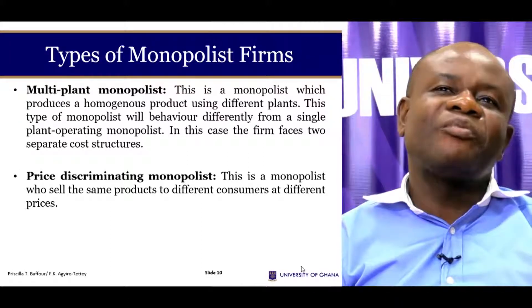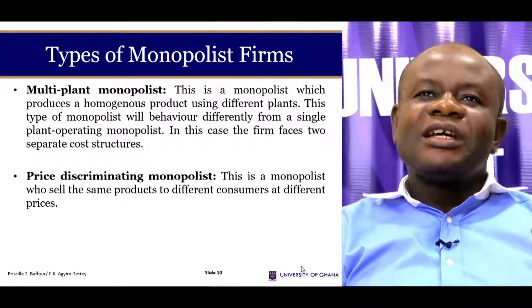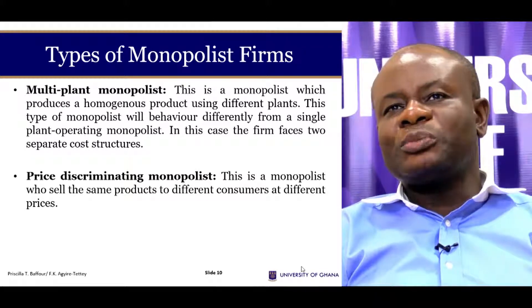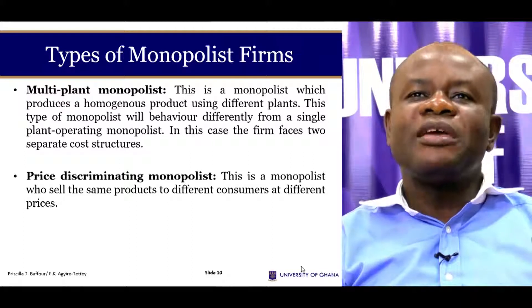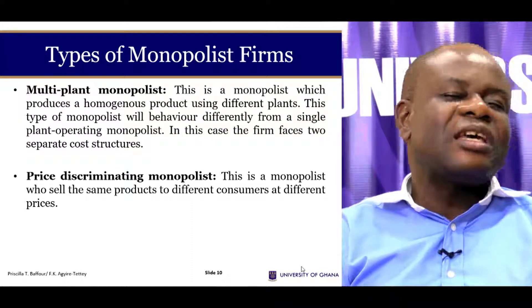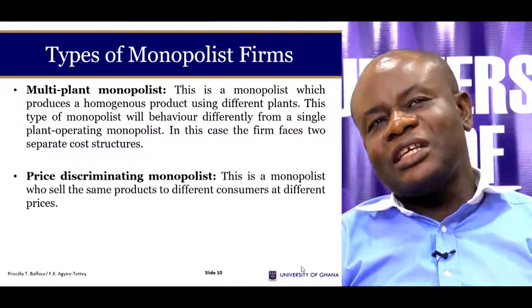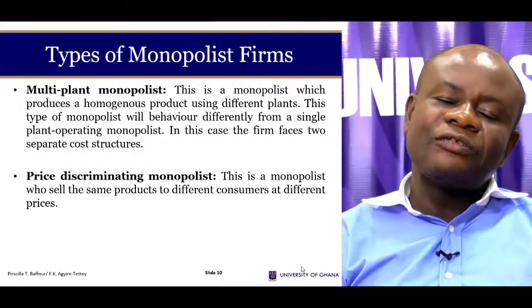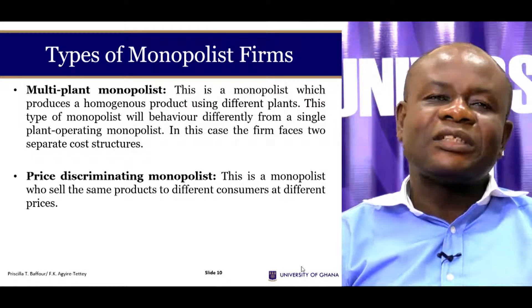We will discuss three types of monopolies. First, the multi-plant monopoly — a monopoly that produces a homogeneous product using different plants. A typical example is the Volta River Authority, which generates electricity using different plants: the Akosombo Dam, the Bui Dam, and thermal plants in the western region.